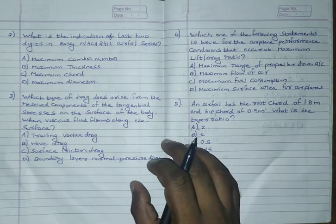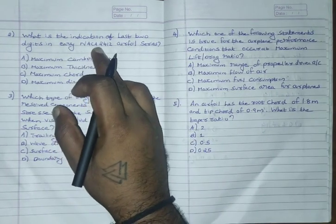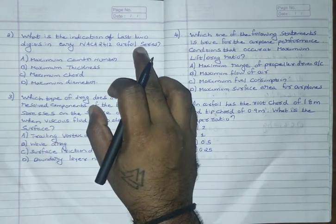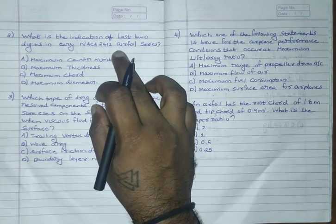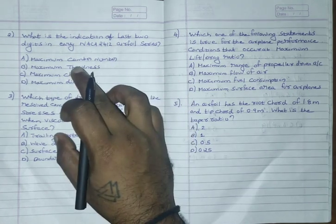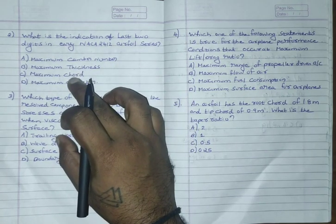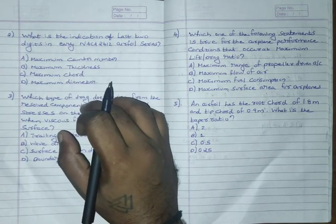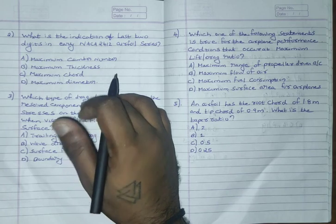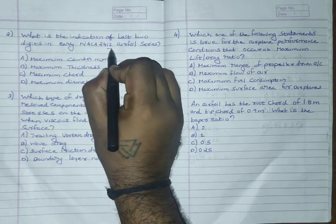Now second question: what is the indication of last two digits in early NACA 2412 airfoil series? The options are maximum camber, maximum thickness, maximum chord, maximum diameter. This is straightforward - the last two digits gives the maximum thickness.